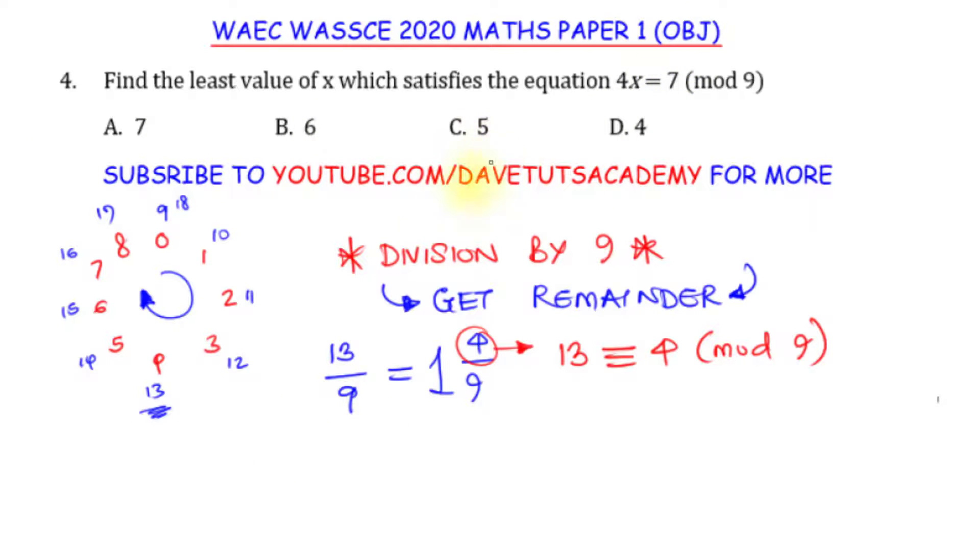So for this question, what we now have will be that 4x equals 7 under modulo 9 is nothing but saying we have 4x equals 7 plus 9. That is the least value. The next value would be 7 plus 18, just like I indicated there. The third value would be 7 plus 27, those multiples of 9.